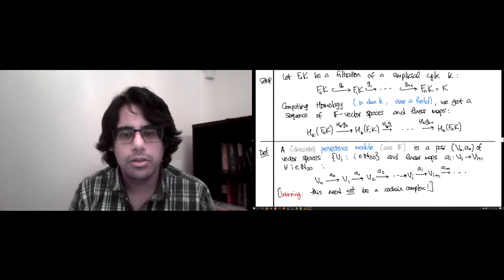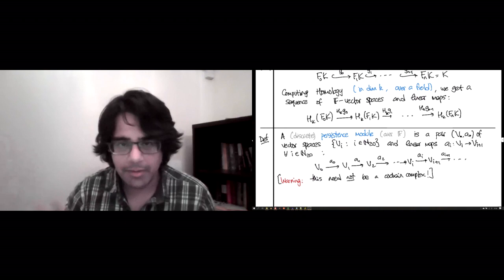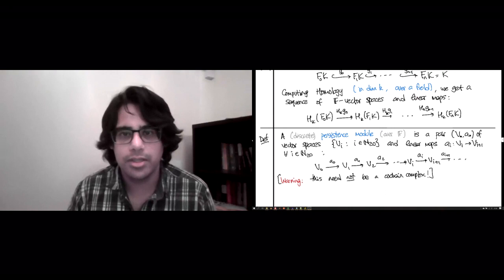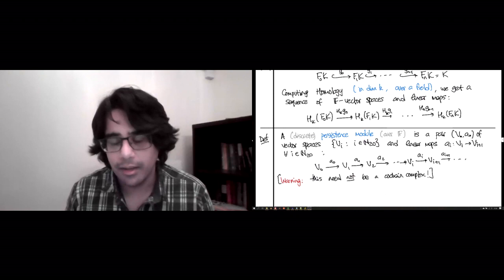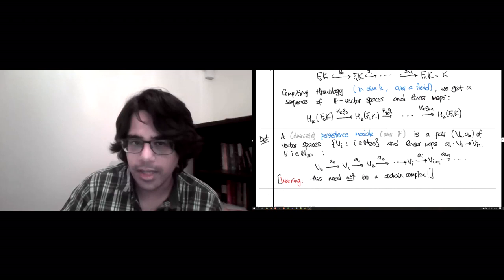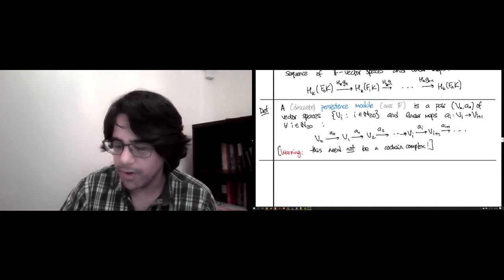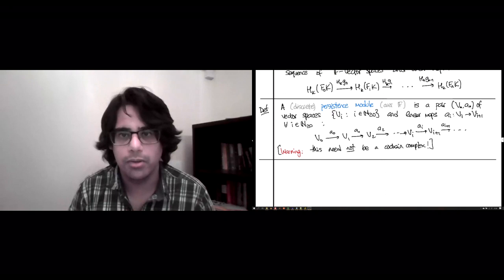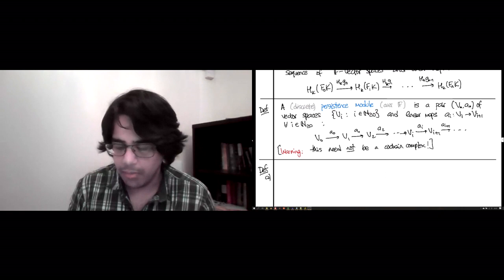We have sequences of vector spaces and linear maps — a fairly simple type of object to study. But there is a lot of information: even if you truncate it somewhere, you have finitely many vector spaces and a ton of matrices between them. Our goal is to replace these sequences with much simpler ones that carry the same information. To make all of that precise, we need to define a few categorical notions: what does it mean to break a persistence module into simpler modules, and what are the simpler modules?